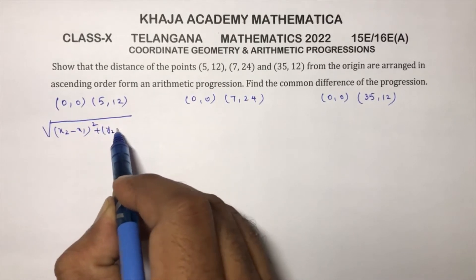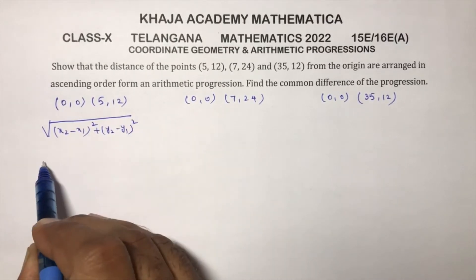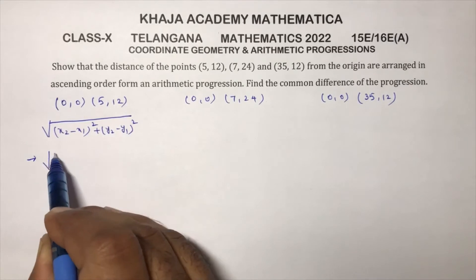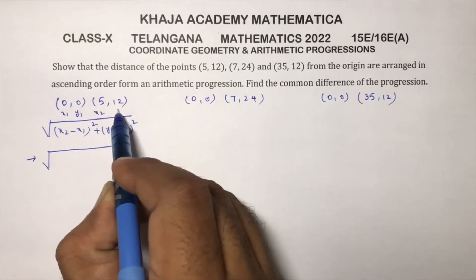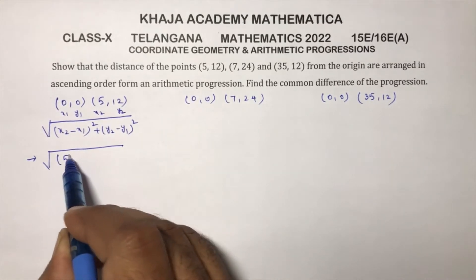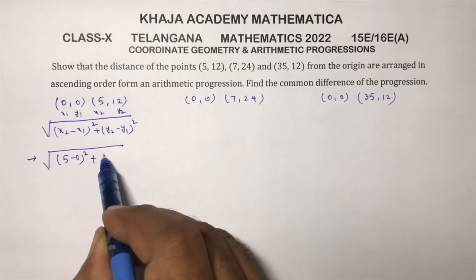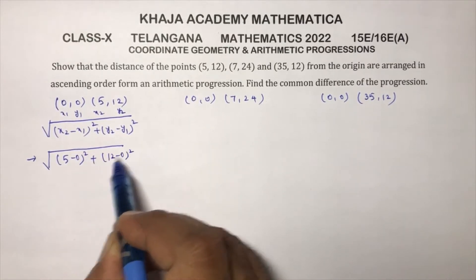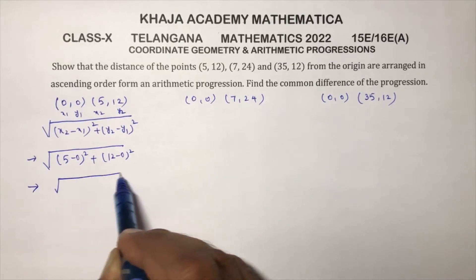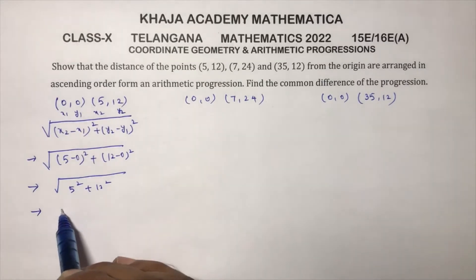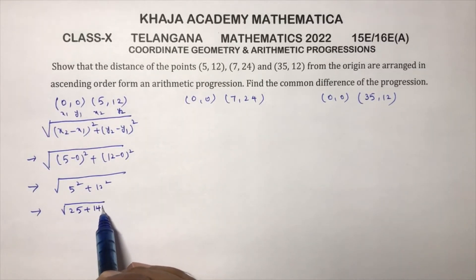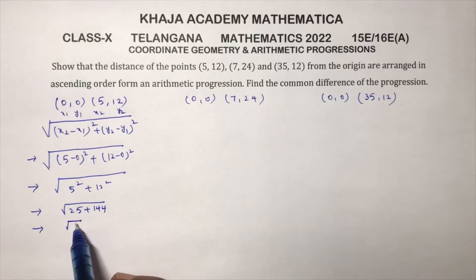So here under root, this is x1, y1, x2, y2, so (5 minus 0) whole square and (12 minus 0) whole square. So this is 5 square plus 12 square, so 5 square is 25, 12 square is 144.